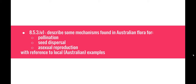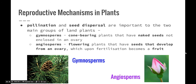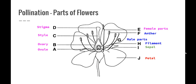Let's start with pollination, the first of the dot points in this syllabus. Pollination and seed dispersal are important in the two main groups of land plants: the gymnosperms, which are cone-bearing plants with naked seeds not enclosed in an ovary, and angiosperms, the flowering plants whose seeds develop from an ovary and upon fertilization become a fruit. Pollination in gymnosperms is largely affected by wind, whereas angiosperms have evolved diverse ways of achieving pollination by insects, other invertebrates, vertebrates including birds and mammals, and also wind.